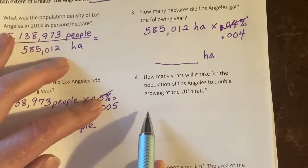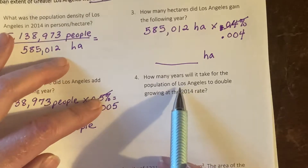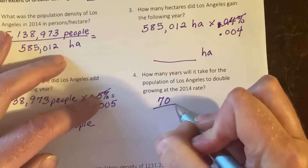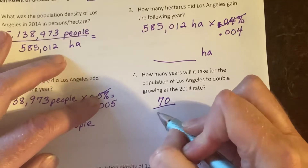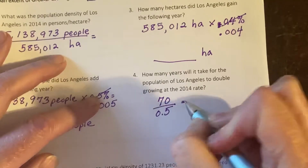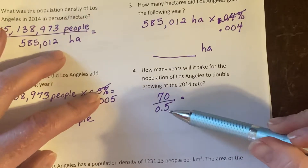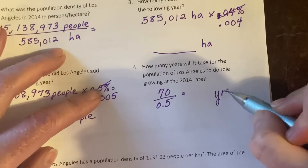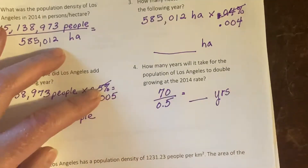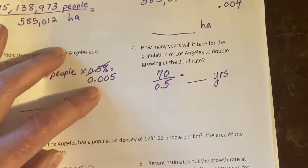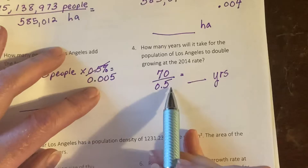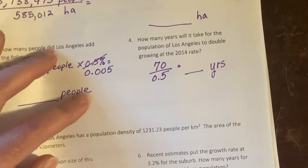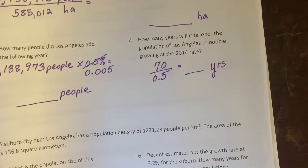How many years will it take for the population of Greater Los Angeles to double, growing at its 2014 rate? It's the Rule of 70: 70 divided by R, where the growth rate R is 0.5%. Even though you don't cancel out percent units, this formula comes out in years — it's just this special formula. So 70 divided by 0.5% gives you the doubling time in years.